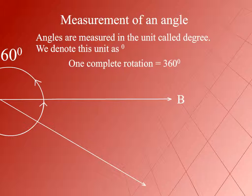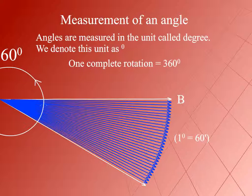If we divide a degree into 60 equal parts, each part is known as a minute, denoted by 1 prime. So 1 degree is equal to 60 minutes. If we divide a minute into 60 equal parts, each part is known as a second, denoted by 2 primes. So 1 minute is equal to 60 seconds. In summary: 1 rotation = 360 degrees, 1 degree = 60 minutes, and 1 minute = 60 seconds.